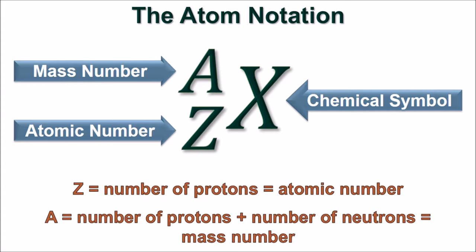The mass number of an atom is the sum of the number of neutrons and protons in the nucleus of an atom. The number of protons in an atom of any element does not change, but the number of neutrons can.